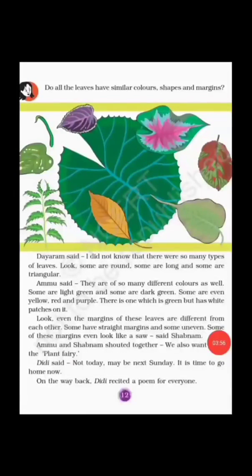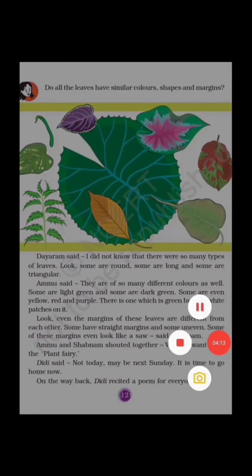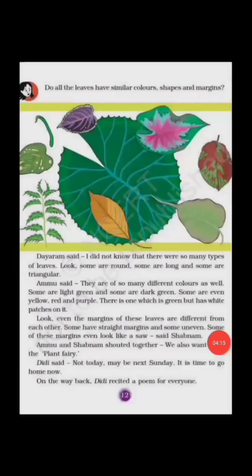As I have told you, leaves are not only one colour — they can be red, yellow, purple. You can see in the picture so many leaves of different colours. Look at the margins of leaves too. These leaves are different from each other. Some have a straight margin and some uneven. Some of these margins even look like a saw, said Shabnam.